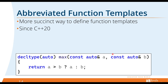C++20 introduces abbreviated function templates. Simply put, the template parameters can be replaced by the `auto` keyword, and the function parameter types are deduced automatically based on the arguments passed to the function. This is the same as a template parameter — if A is a double and B is a float, that's what they'll be when the function is generated. That's why we use `decltype(auto)` — so we can deduce the correct type based on the passed parameters and the return value.